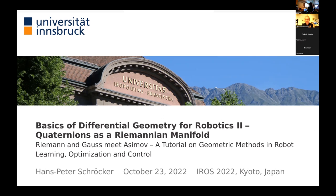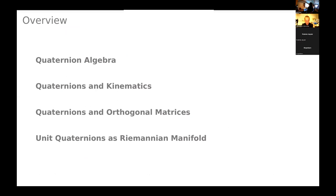This will be a talk mostly about algebra and not so much about Riemannian geometry or differential geometry — that will only be at the end. I will start with the introduction of a quaternion algebra, talk about quaternions and their relevance to kinematics, and compare them to orthogonal matrices when parametrizing SO(3), the group of rotations. Then in the last part, I will discuss unit quaternions as a Riemannian manifold, which is a very good and simple example.